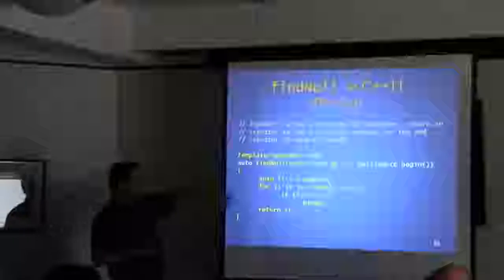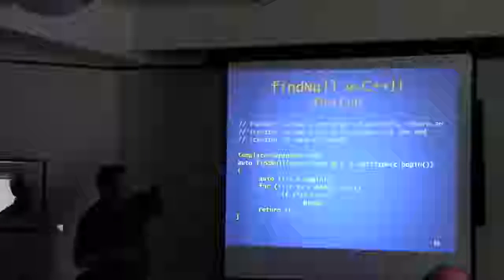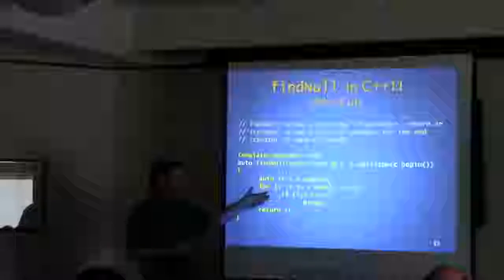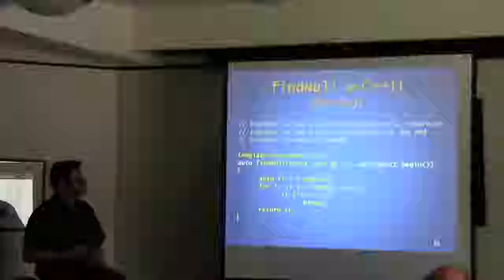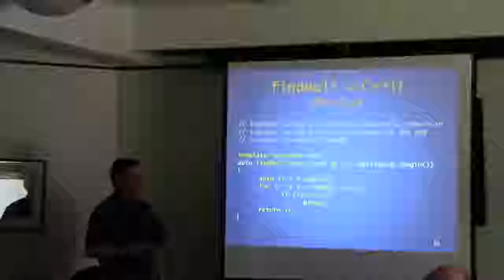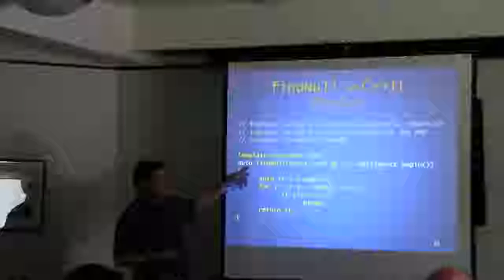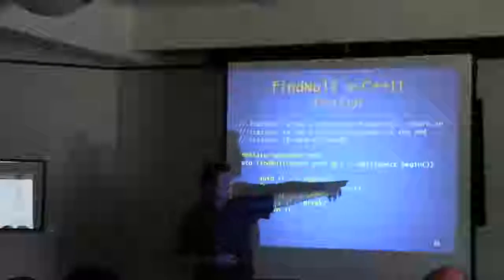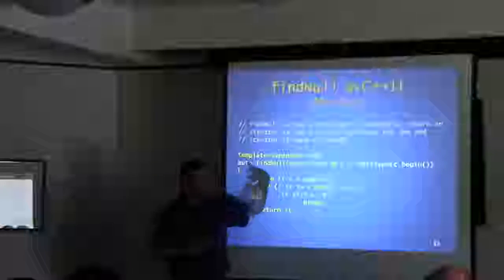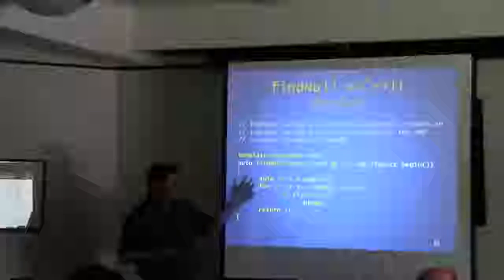Here's our first cut at a rewrite of the find_null function template in C++11, applying auto and trailing return type. What are we returning? It's an iterator — so we just use decltype(c.begin()) as the trailing return type. As a quick sanity check: since it's a const container, doing begin on a const container gives you the const_iterator, which is the correct return type. Then we go through and do the same things we did before with auto. Nothing really new there.